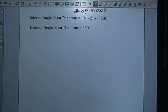The exterior angle sum theorem - well, this is a nice one, it's an easy one to remember because it's always 360.